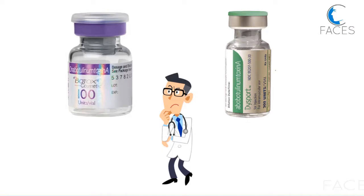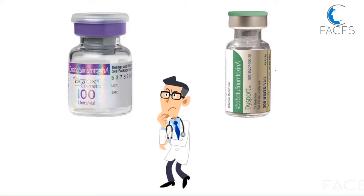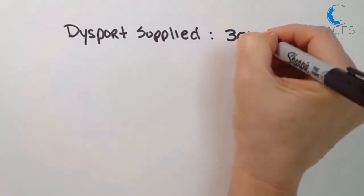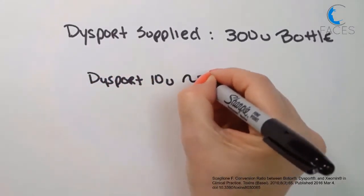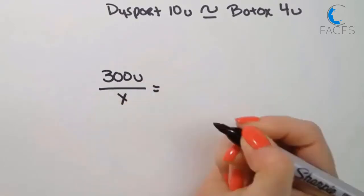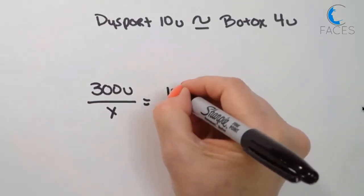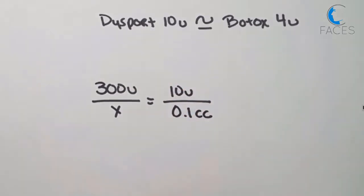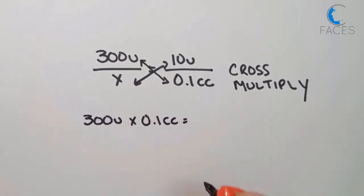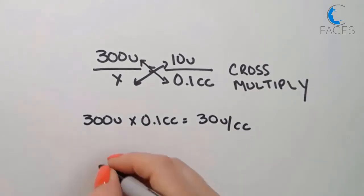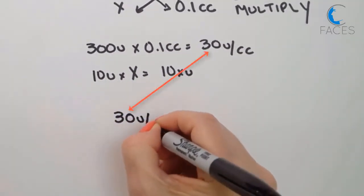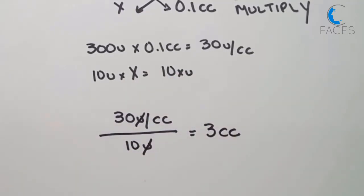Now back to our original question of how can we make things easier when we use neurotoxins that are not unit equivalent, as would be the case if we were switching between Dysport and Botox. Dysport is supplied in 300 unit bottles. With respect to potency, the literature tells us that 10 units of Dysport is roughly equivalent to 4 units of Botox. Since that's our conversion ratio, here's our equation: 300 units is what we have in a bottle. To have the same potency per volume with Botox, we want to have 10 units in each tenth of a cc. We cross-multiply and calculate just as before: 300 units times 0.1 cc's equals 30 units per cc, and 10 units times x equals 10x units. Next, we divide 30 units per cc by 10 units. The units cancel out, and we arrive at 3 cc's.